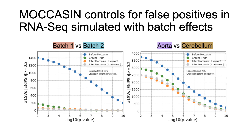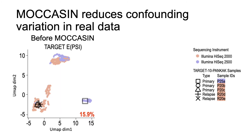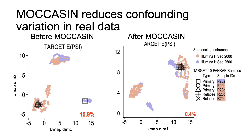We tested a wide range of simulated batch effects, which you can see in further detail in my poster or in the preprint. Next, we ran MOCCASIN on real data. On the left is the UMAP of the TARGET cancer data, where 15.9% of the total variation in PSI is attributable to a batch effect. After applying MOCCASIN, this is brought down to 0.4%. You can check out my poster to see how I also applied MOCCASIN to over 1,000 ENCODE RNA-seq experiments, which also suffered from batch effects. MOCCASIN not only reduces false positives, but also increases power to detect differences in splicing in both the ENCODE and TARGET datasets.